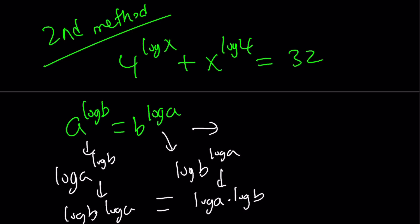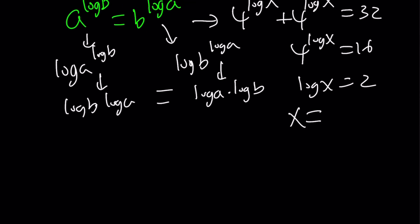which means we have 4 to the power log x plus 4 to the power log x equals 32, which means 4 to the power log x equals 16, and log x equals 2, and by definition, x equals 10 to the power 2, which is 100.